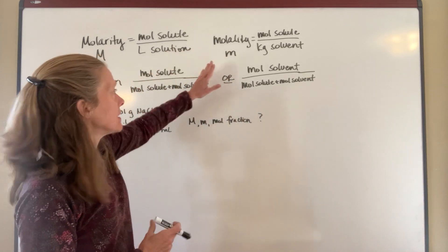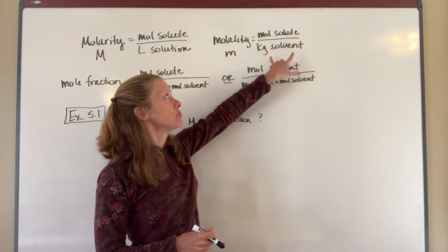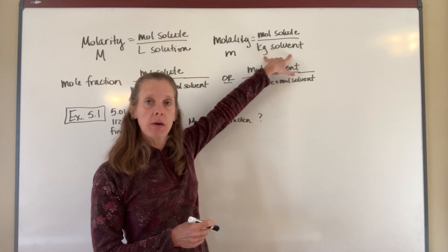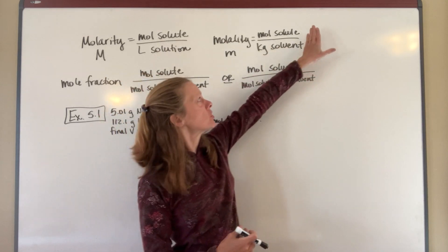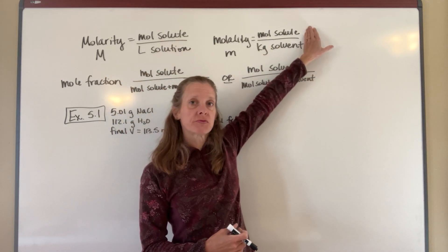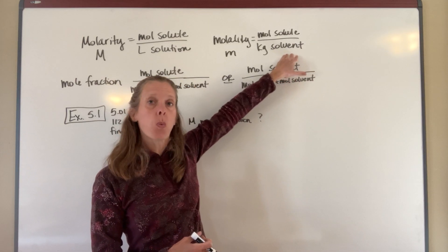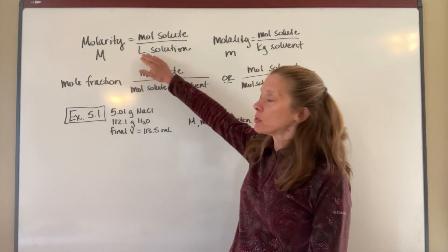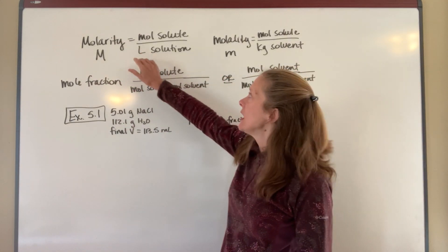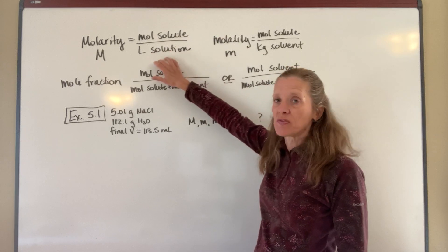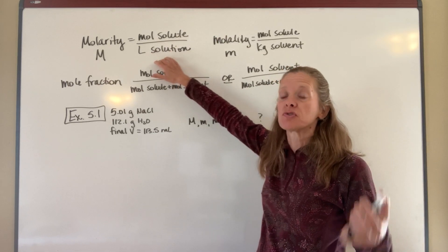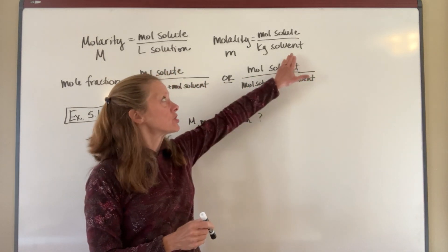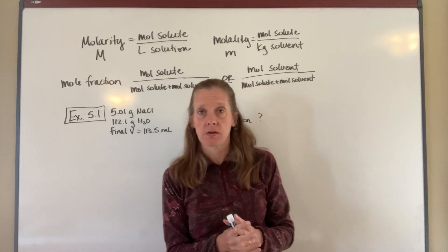Molality, on the other hand, is the moles of solute per kilograms of solvent. So if I'm going to dissolve salt in water, it would be the moles of salt divided by the number of kilograms of water, and that is abbreviated with a little m. Whereas molarity of the same solution would be the moles of salt divided by the liters of solution you end up with. Solution versus solvent — make sure you don't get those two things confused.